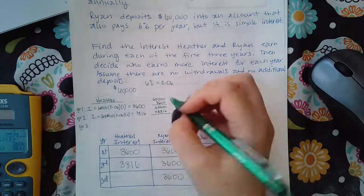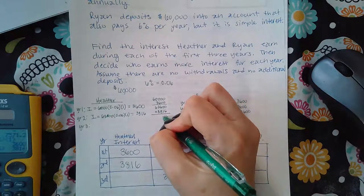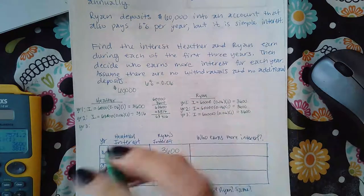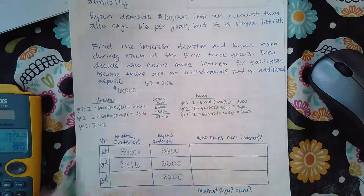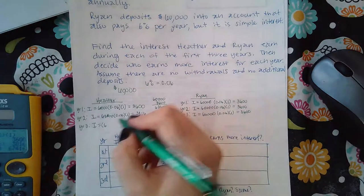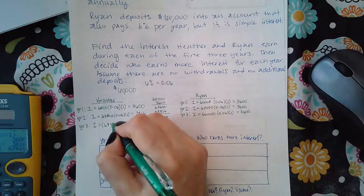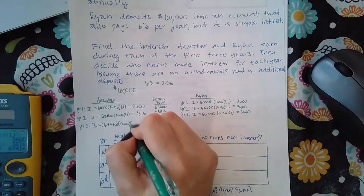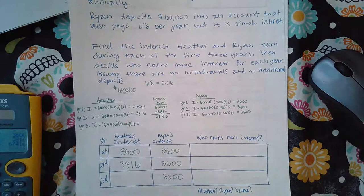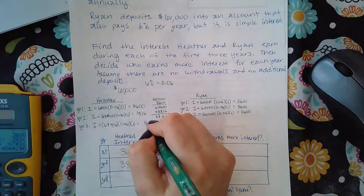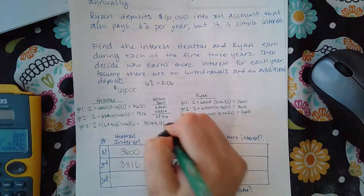So now I have $67,416 times the rate times the one year, and now I get $4,044.96.